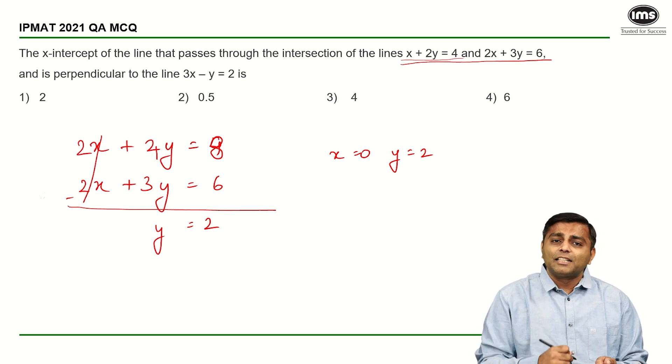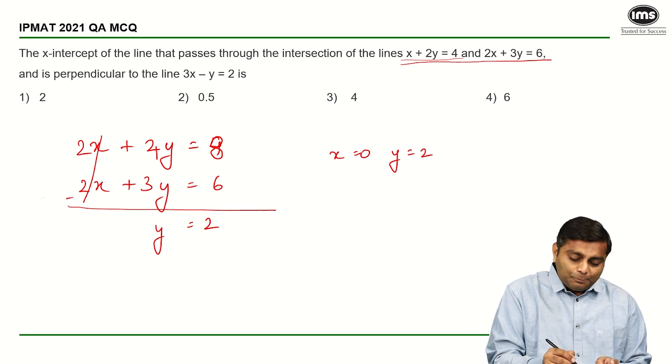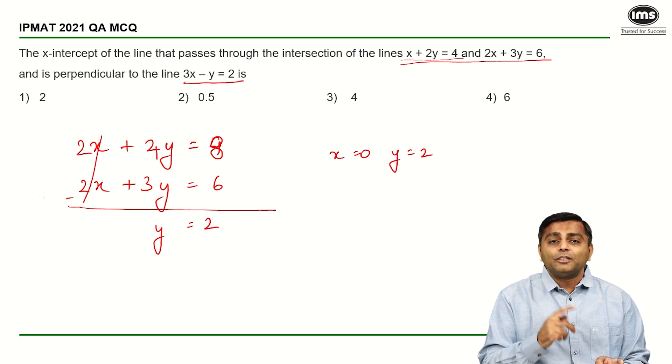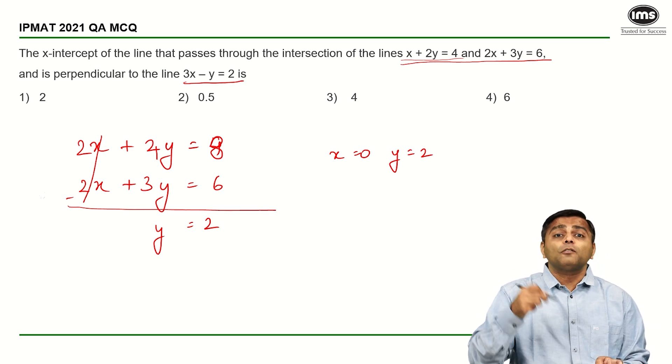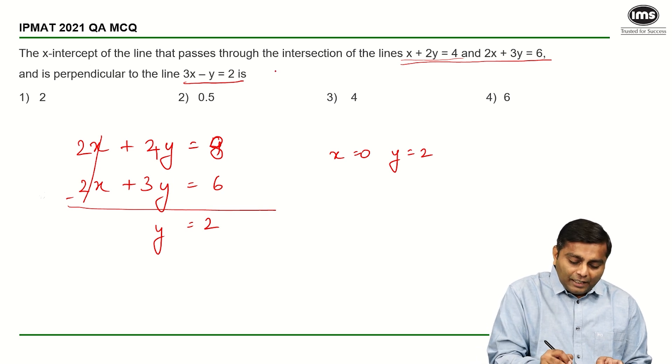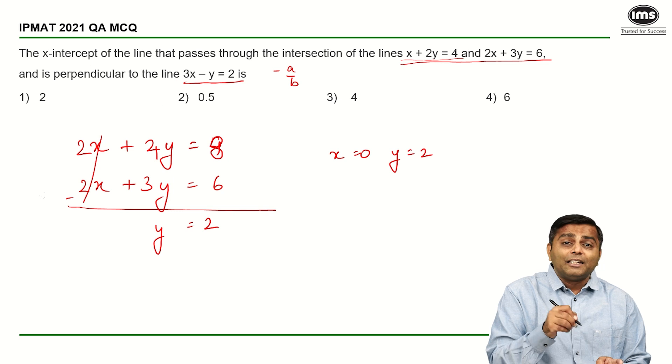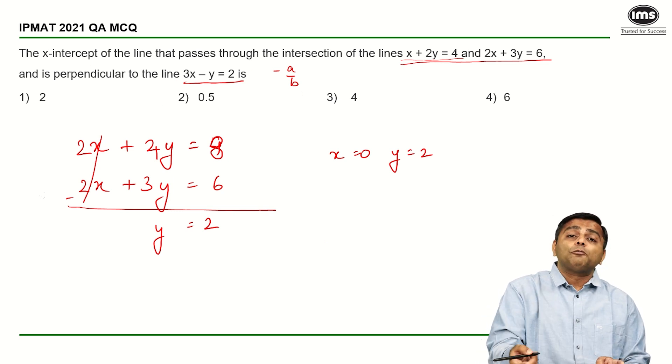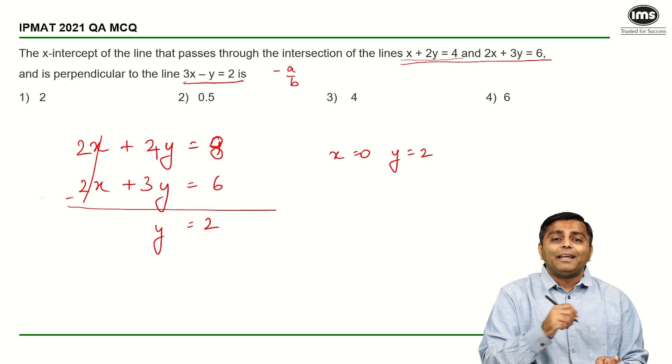Now what is the other info that is given about that line? That that line is perpendicular to this line. Perpendicular, you know that the product of the slopes of the perpendicular lines is minus 1. The slope of this line, slope of any line is minus a by b. So this is going to be minus 3 upon minus 1. So the slope of this line is 3 and therefore slope of our line is going to be minus 1 by 3.